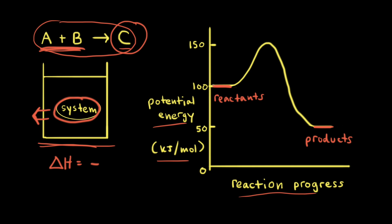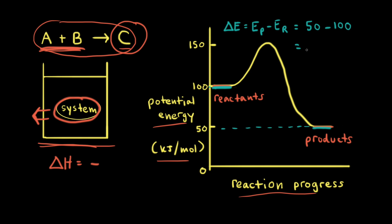Notice how the potential energy of our reactants is higher than the potential energy of the products. So if we were to find the change in energy, that would be the final minus the initial — the energy of the products minus the energy of the reactants. For this energy profile, the energy of the products is about 50 kilojoules per mole and the potential energy of our reactants is at 100. So this would be 50 minus 100, which equals negative 50 kilojoules per mole.